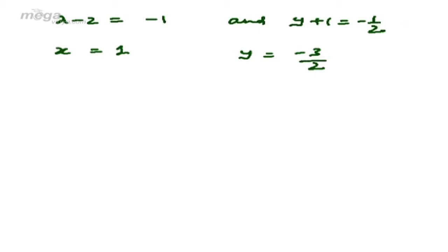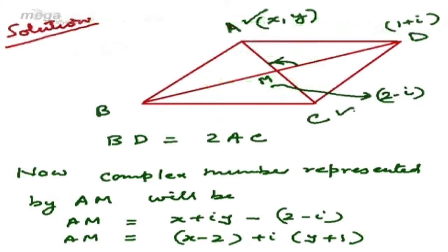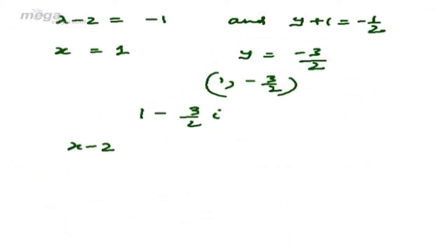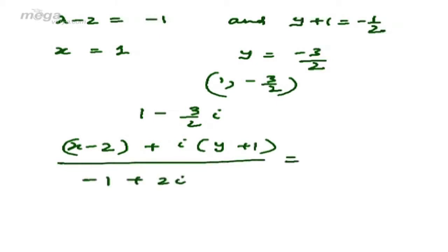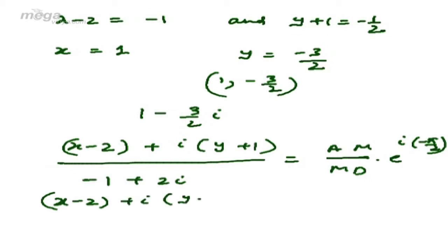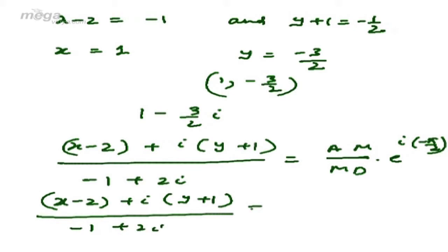So one vertex A can be represented by (1, -3/2), or as the complex number 1 - (3/2)i. Now the position of A can also be where C is. If we rotate the complex number in the clockwise direction, we take the negative sign: (x-2) + i(y+1) divided by (-1+2i) equals -AM/MD · e^(iπ/2), giving -2i divided by (-1+2i).